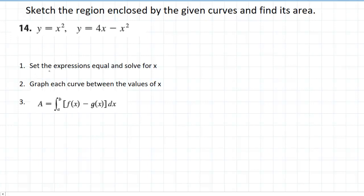In step one, we can see that we're going to set the expressions equal and solve for x. So in this problem, our expressions are y equals x squared and y equals 4x minus x squared. So we're going to want to set those equal to each other.